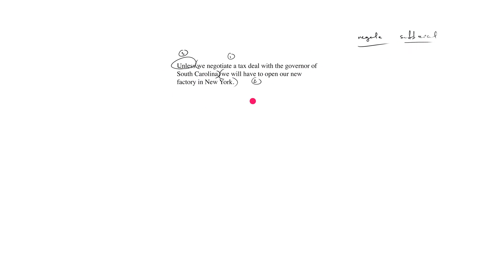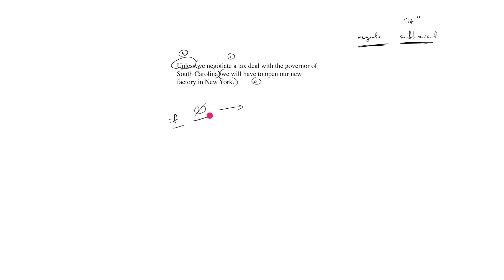What does 'negate sufficient' mean? You have to go through this grammar exercise of identifying the unless as the logical connector, then identifying the two different clauses being glued together. Then you negate one of the clauses and make it the sufficient condition — which means make it the 'if' condition. So it's: if [negated clause one] → then [clause two]. If we write it out: if one-negated, arrow, then two.